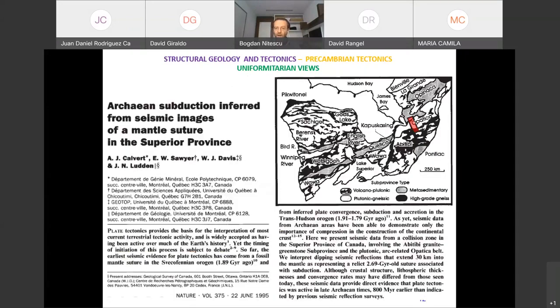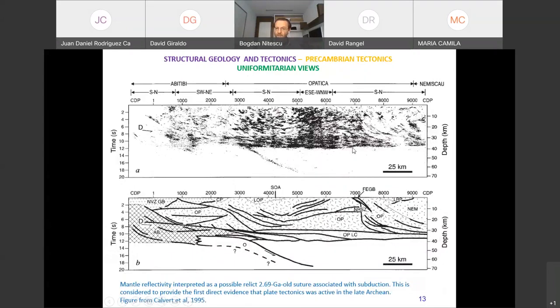Another strong argument, again coming from the Superior Province, was published in 1995 by Andrew Calvert. He's a seismologist. In Canada, you had public money put into investigating the crust of the Superior Province and other parts of the craton. There was a seismic line done here at the boundary between the Abitibi belt and the Opatica belt. What they saw basically, this is the radiography of the Superior Province crust. You see very nicely the Moho here, so where you see this reflectivity ending, that's the boundary between the crust and the mantle. In general, the mantle is featureless in the seismic reflection records.